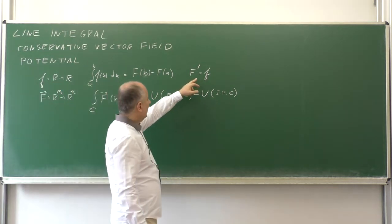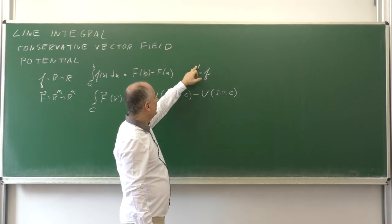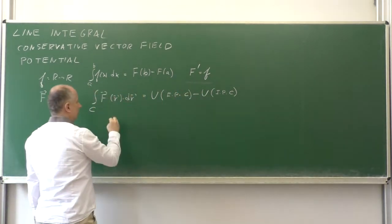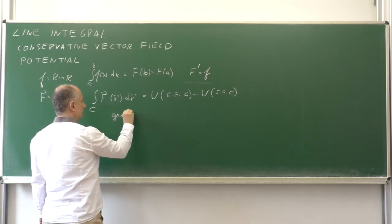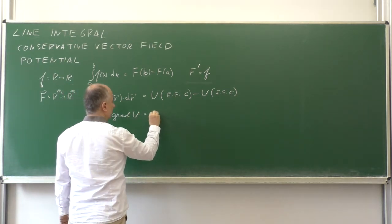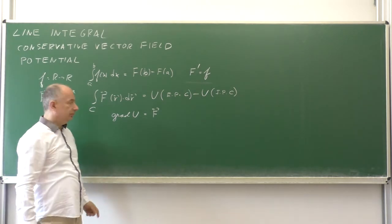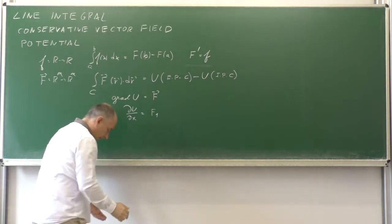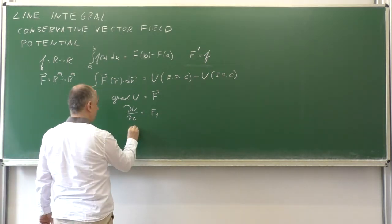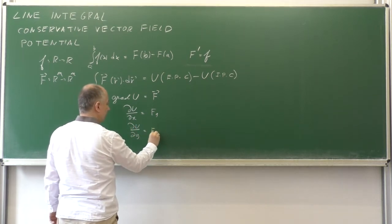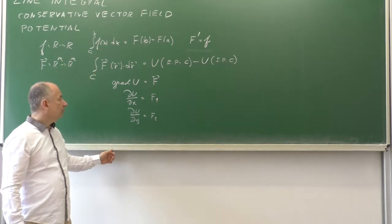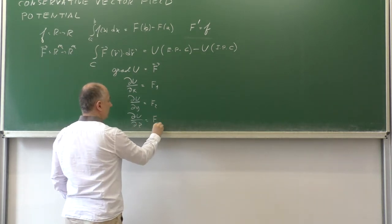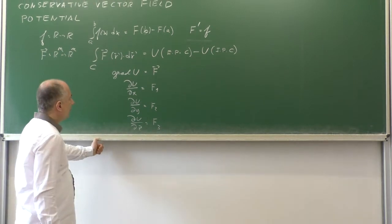Similarly, just as the antiderivative has the property that its derivative is the integrated function, correspondingly here the gradient of the potential u must equal the integrated vector field F. In particular, the partial derivative of u with respect to x must equal F1, and the partial derivative of u with respect to y must equal F2 in two dimensions. In three dimensions, the partial derivative of u with respect to z must equal F3, the third component of F.